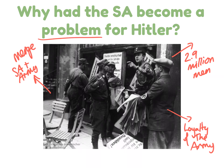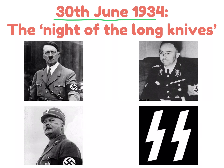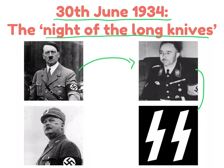Increasingly Ernst Röhm had become a problem and a threat to Hitler's position. Even though Hitler had got rid of trade unions and other political parties, he now faced potential opposition from within the party and had to act. On June the 30th 1934, what became known as the Night of the Long Knives began. Hitler, concerned by the power of Ernst Röhm, asked the leader of the SS, Heinrich Himmler, to make up evidence showing that the SA leaders were trying to take over Germany.